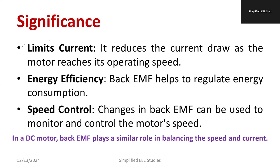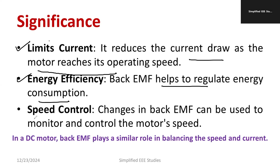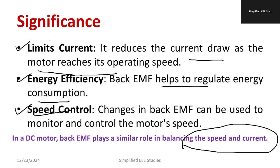The second point is that back EMF limits the value of current — it reduces the current draw as the motor reaches its operating speed. That is a plus point. Energy efficiency is also improved, as back EMF helps regulate energy consumption by acting as an opposing force to the applied voltage. Initially back EMF is zero, but whenever the motor reaches almost its rated speed, the back EMF will be high, acting as a self-regulating machine and reducing excess energy draw. It also minimizes overspeeding by opposing the motor reaching dangerous speed, balancing both speed and current.